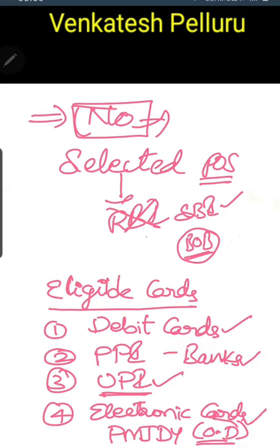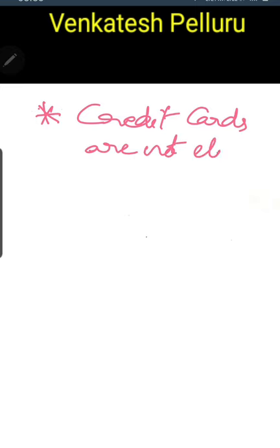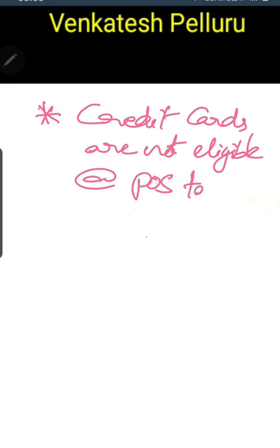Electronic cards issued to PMJDY (Pradhan Mantri Jan Dhan Yojana) account holders — specifically for the overdraft facility — are also eligible for withdrawal of cash from POS terminals. The most important point regarding cards eligible for POS transactions: credit cards are not eligible. A person cannot withdraw money using credit cards at POS terminals. This is a very, very important point — credit cards are not eligible for cash withdrawal from POS terminals.